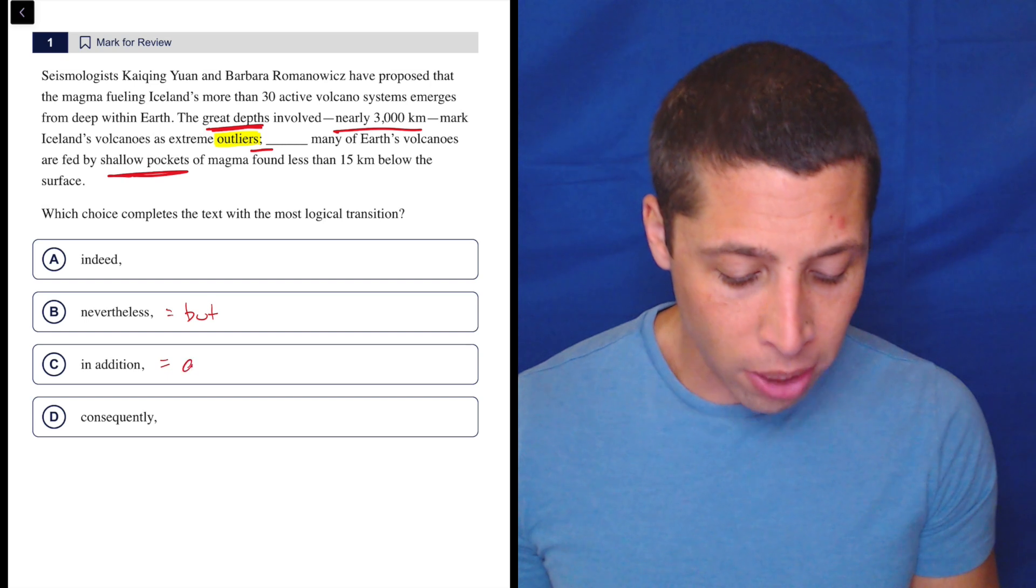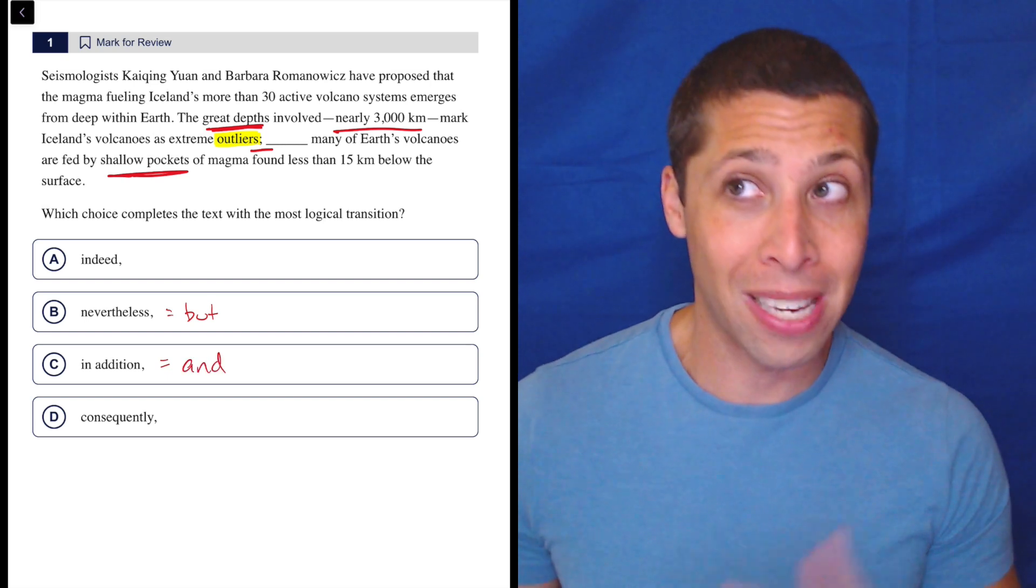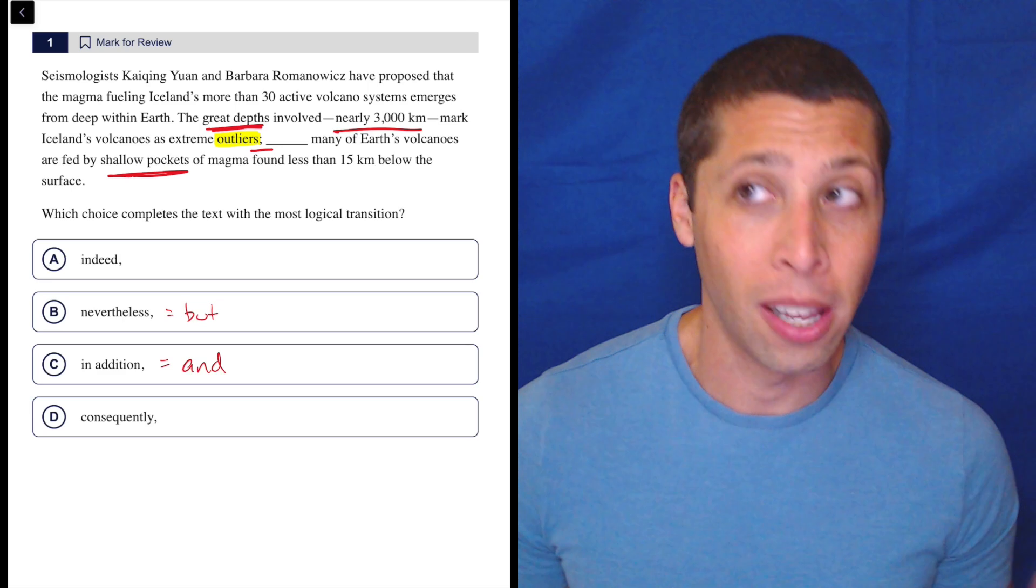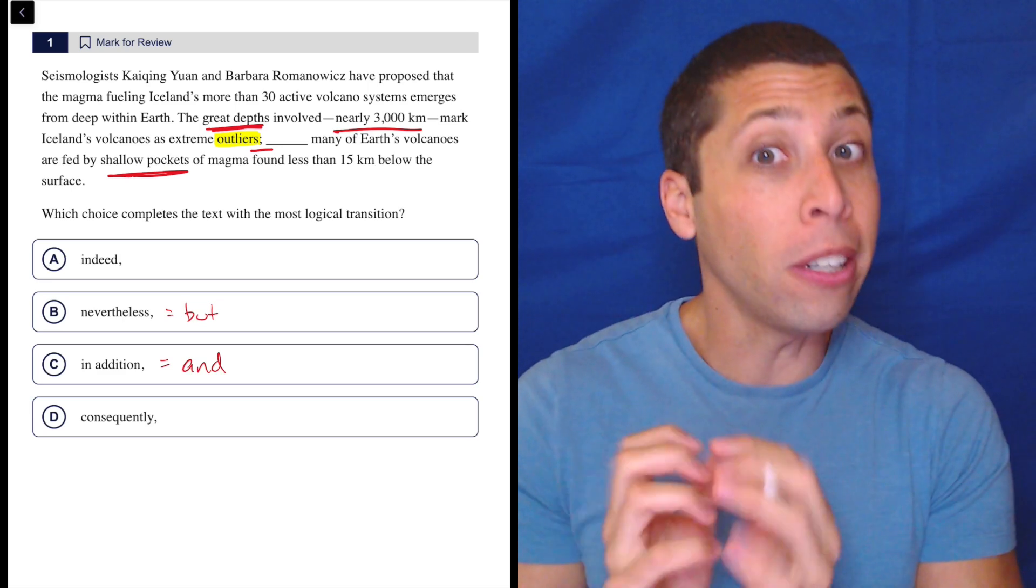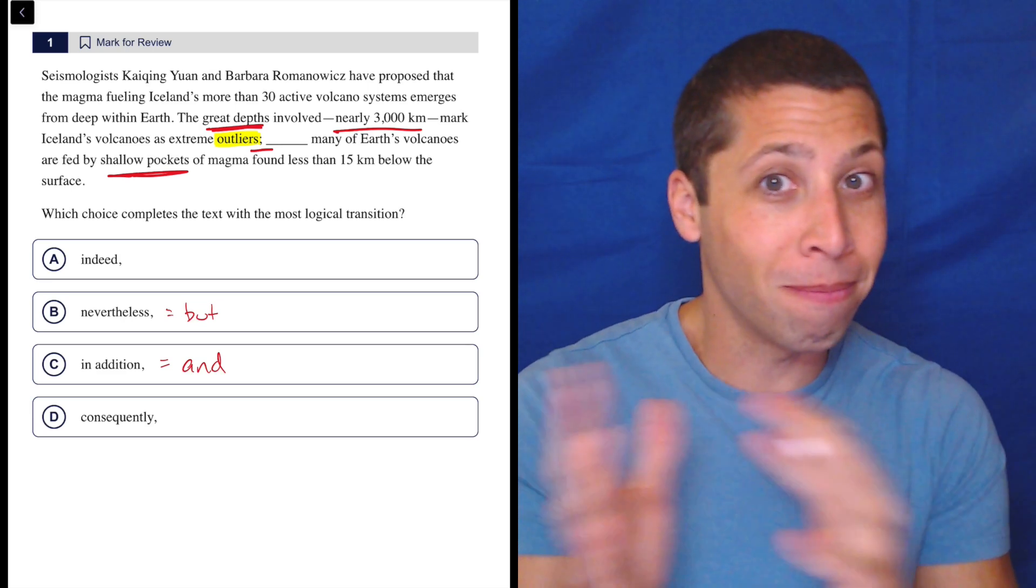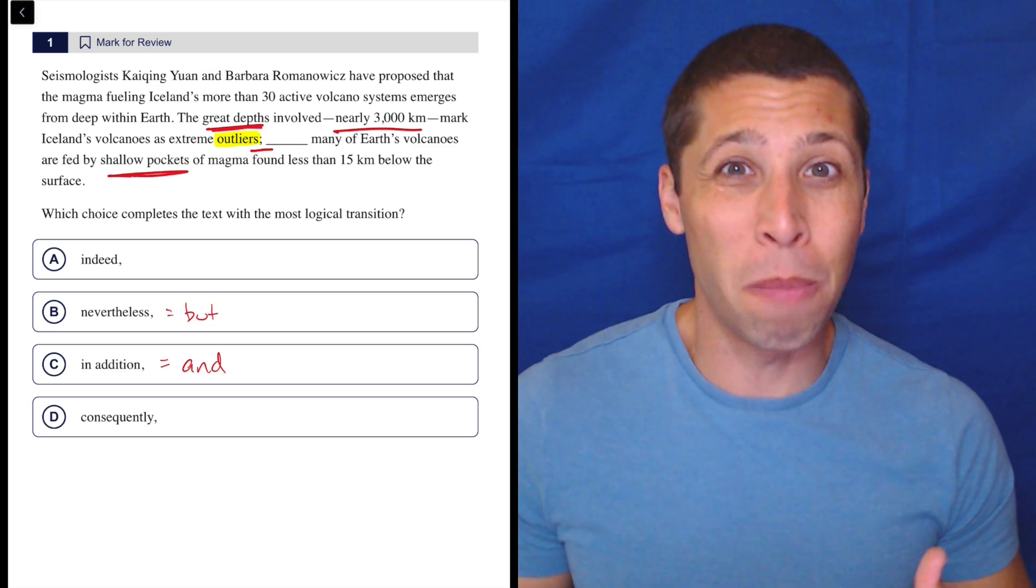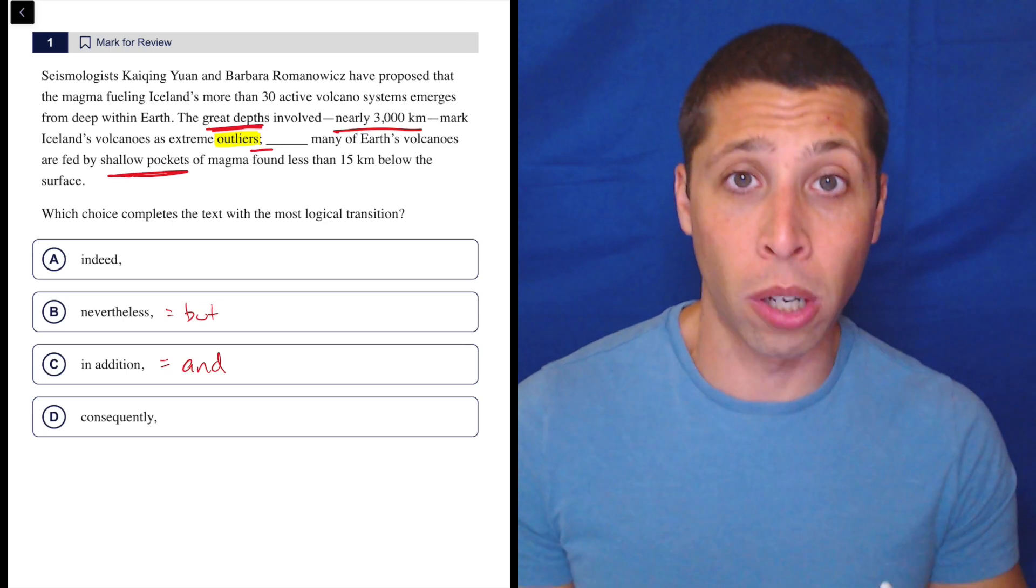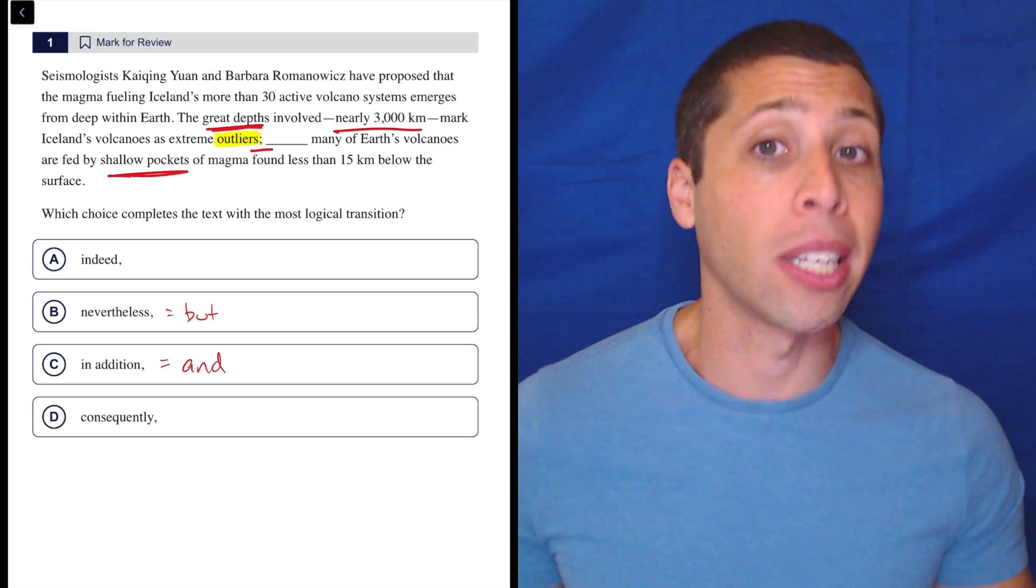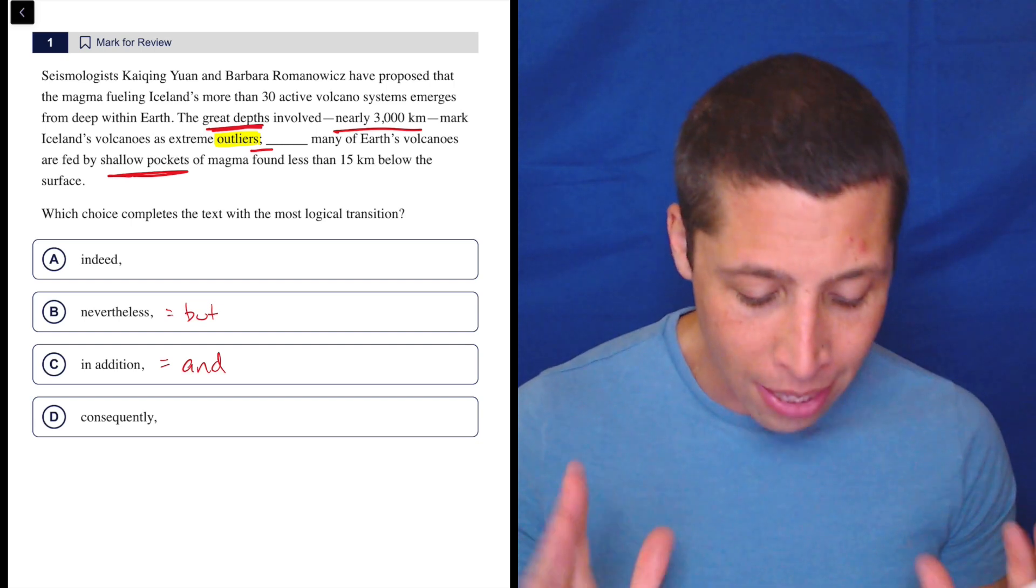Now indeed is weird. In addition is and. So I'm not really going to pick that unless nothing else works, because that's not really a transition at all. That is just like, here's another point. But these are clearly related. So there's some relationship we're trying to convey. And in addition would be a very bland way to do it. So most of the time when we have these and words, we're not going to pick them unless everything else is obviously wrong. It's not looking good for C. I'm not going to eliminate it, but it's not looking good.